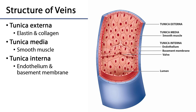The tunica interna of veins still has an endothelial layer supported by a basement membrane. But in some veins there are interesting elaborations of the tunica interna that form one-way valves. As blood moves from one section to the other, if it attempts to flow back, the valves close. This is very useful because blood flow in veins is very low pressure and relies on forces other than the blood hydrostatic pressure generated by the heart in order to move things forward.